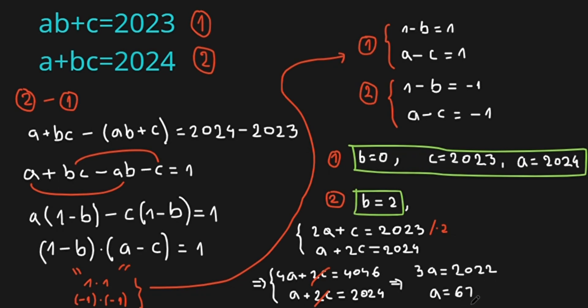And we have A minus C equals minus 1. C is A plus 1, so this means C is 675. So our second solution is B equals 2, A equals 674, and C equals 675.